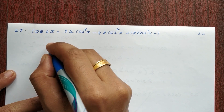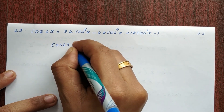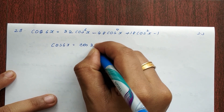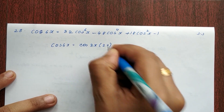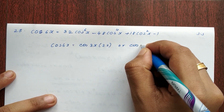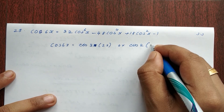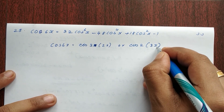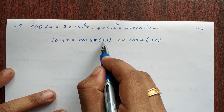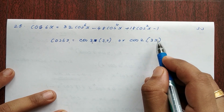So let's do this. Cos6x is equal to cos(3 into 2x), that's the same thing. Or cos(2 into 3x) — 3 into 2x, that's the same thing. So cos6x equals cos(2 into 3x).